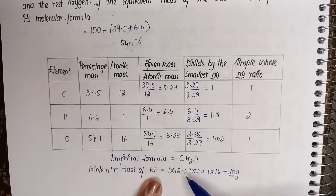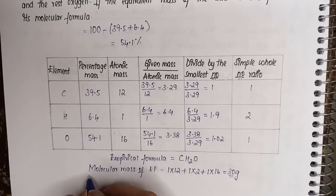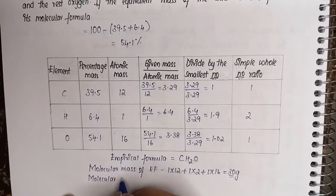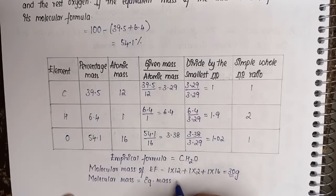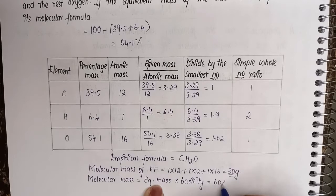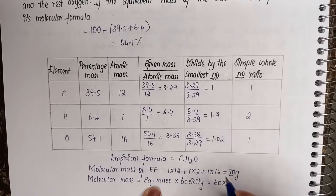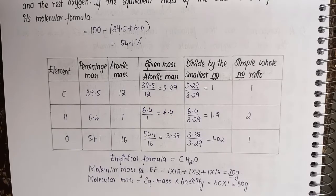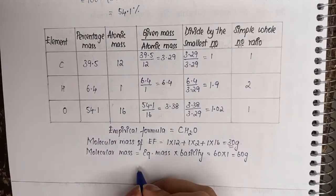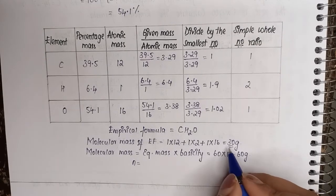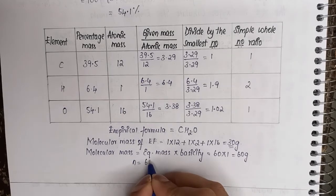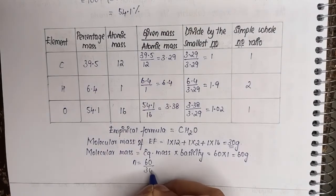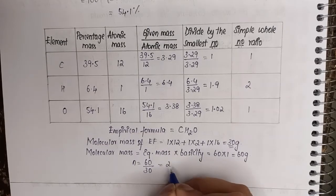From the question, the equivalent mass of the acid is given, and from that we find the molecular mass. Molecular mass equals equivalent mass multiplied by basicity. The equivalent mass is 60 and the basicity of this compound is 1, so the molecular mass equals 60. Now we calculate the n value: n equals molecular mass divided by empirical formula mass, which is 60 divided by 30, giving n equal to 2.